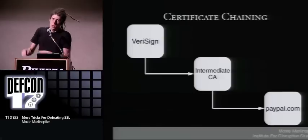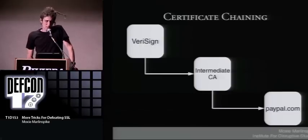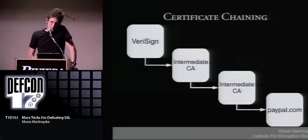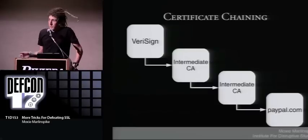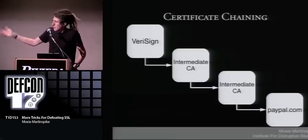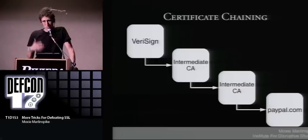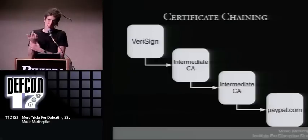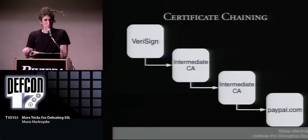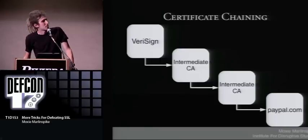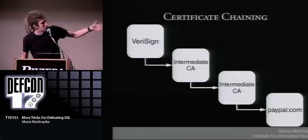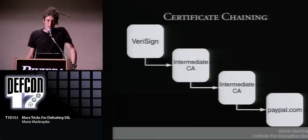You hand the whole chain to a web browser and the browser deals with it. It could be more than three — you can have any number of intermediate certificate authorities in the chain. I don't think there's any standard that says how many is the maximum; it's implementation specific. For Firefox it's like 25, so you could have a certificate chain with 25 intermediate CAs.